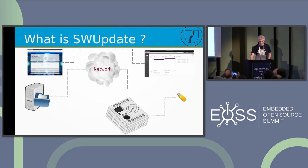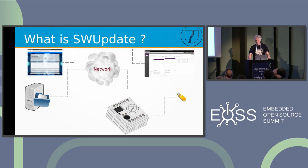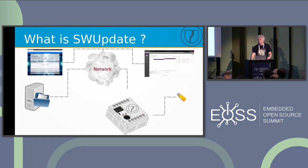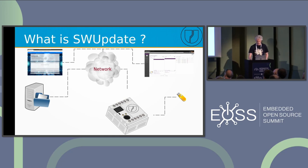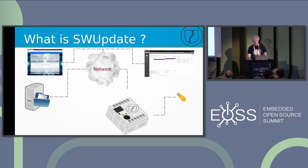SWUpdate is an update agent. After your build in Yocto, Debian, or whatever you are using, you have to put the artifacts together — to pack them — and SWUpdate provides a way to pack everything together and to install it on your embedded Linux device. It supports any kind of storage: eMMC, NAND flash, and so on.